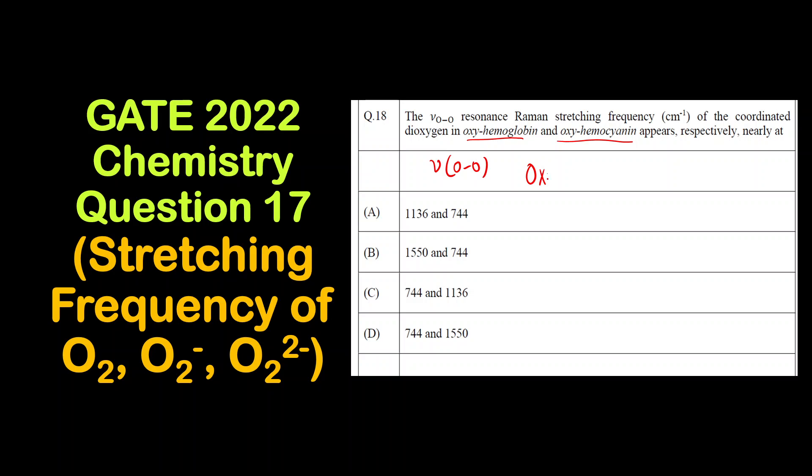For that you have to remember that for oxyhemoglobin, the oxygen species that is attached to the iron central atom is O2 minus. This is superoxide. O2 minus is superoxide.